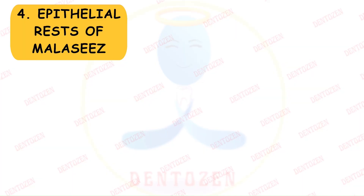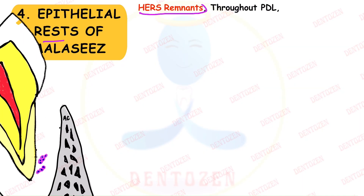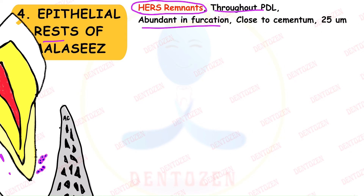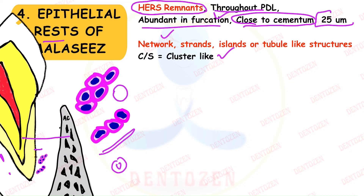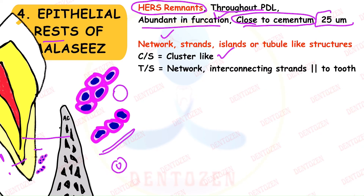The epithelial cell rests of Malassez are remnants of Hertwig's epithelial root sheath, which helps in root formation. Their remnants may remain throughout the periodontal ligament but are most abundant in furcation areas. They lie close to cementum — about 25 micrometers from it. They may appear as networks of cells, strands, islands, or tubule-like structures depending on the section cut.